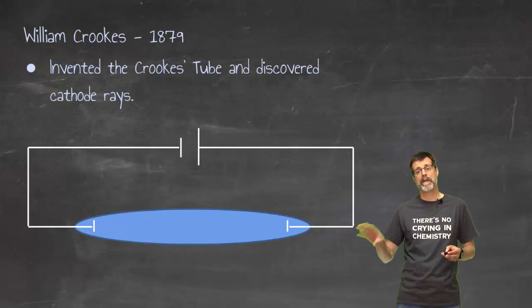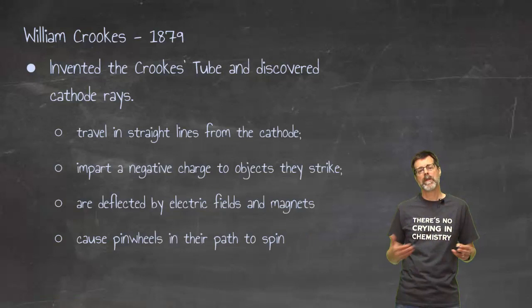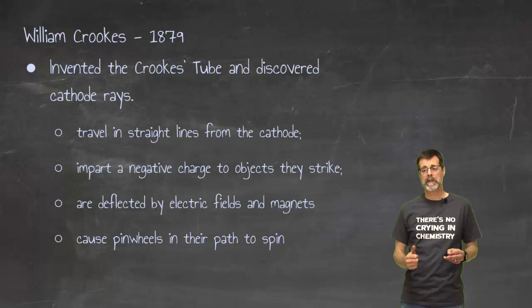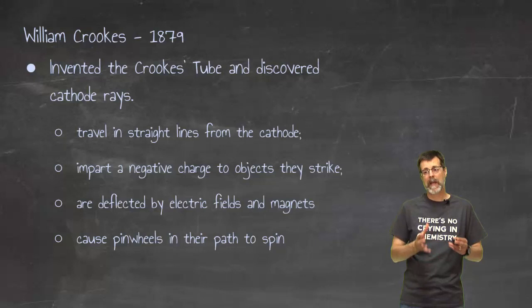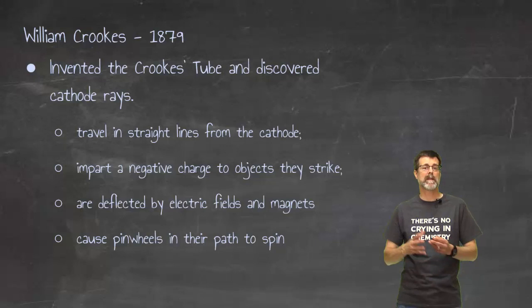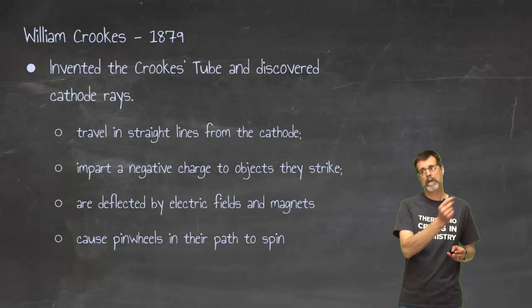That becomes a little bit more important later. When you turned on the power, then you had these beams, these cathode rays, and they had these properties. The thing about those beams is that this idea of a negative charge and the fact that it caused these pinwheels to spin suggested things about what that beam was made of that could not be explained with what they knew about atoms at the time. So it required us to change our theory.